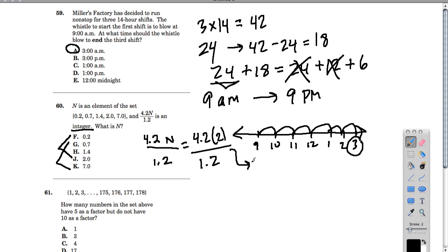4.2 times 2 is like 2 times 4, which is 8, and then 2 times 0.2, which is 0.4. That divided by 1.2. Well, 1.2 times 7 is 7 times 1 is 7, and then 7 times 0.2 is another 1.4. So, in fact, that worked out very nicely, and the answer is 7.